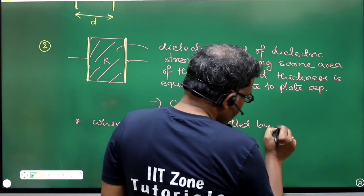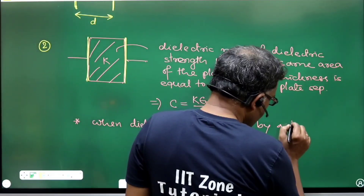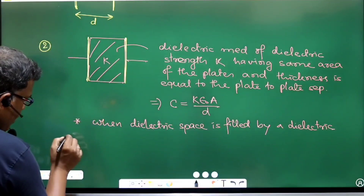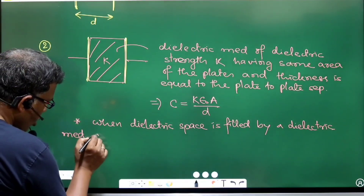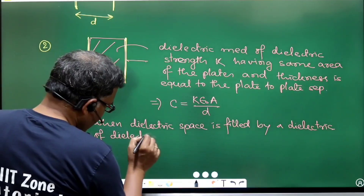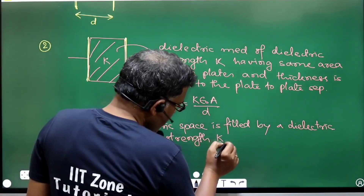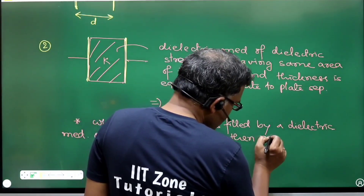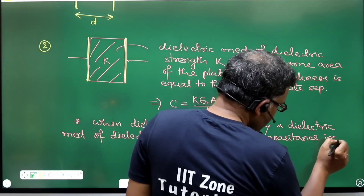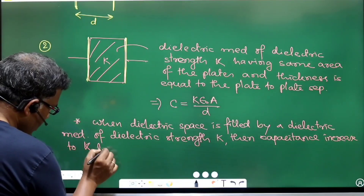So we can write the statement: when the dielectric space is filled by a dielectric medium of dielectric strength k, the capacitance increases to k times the original value.